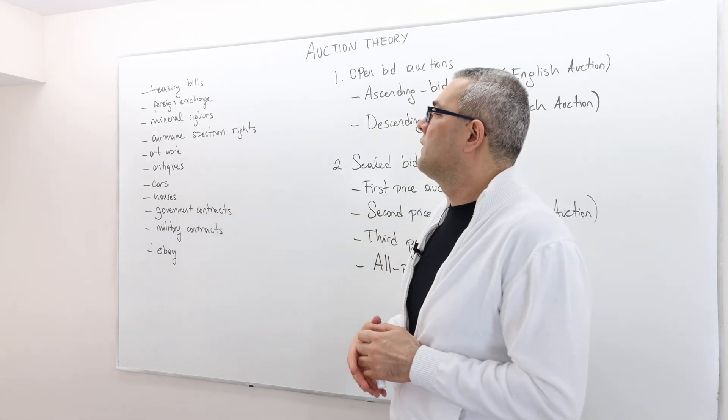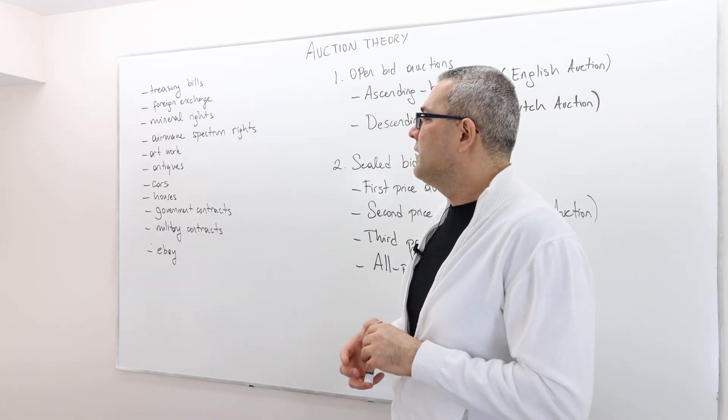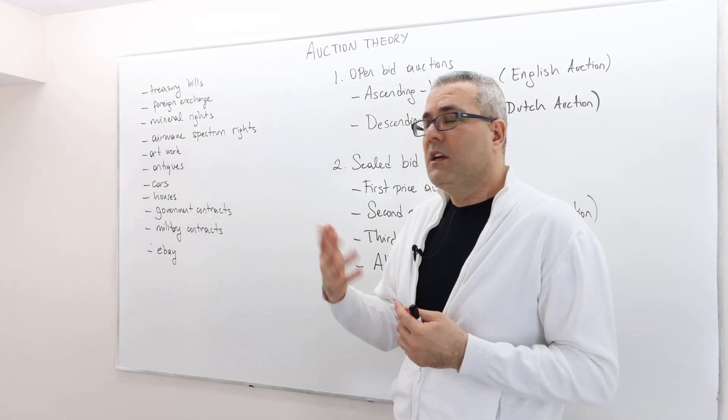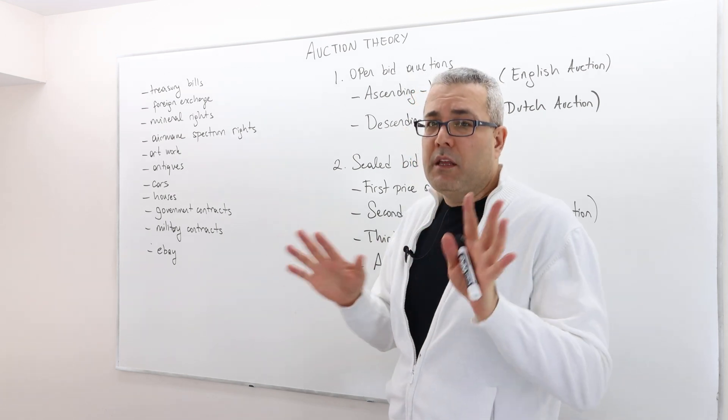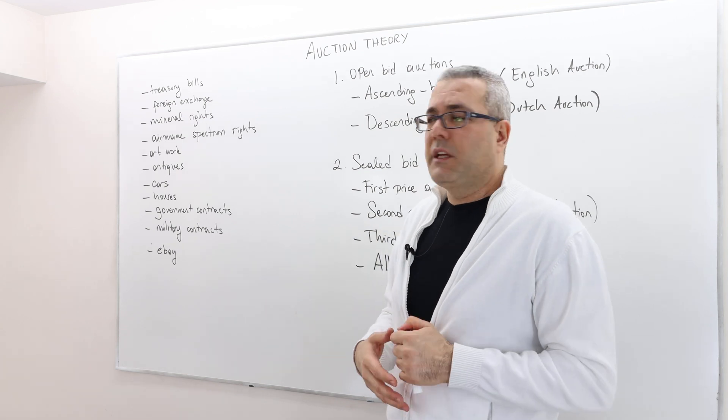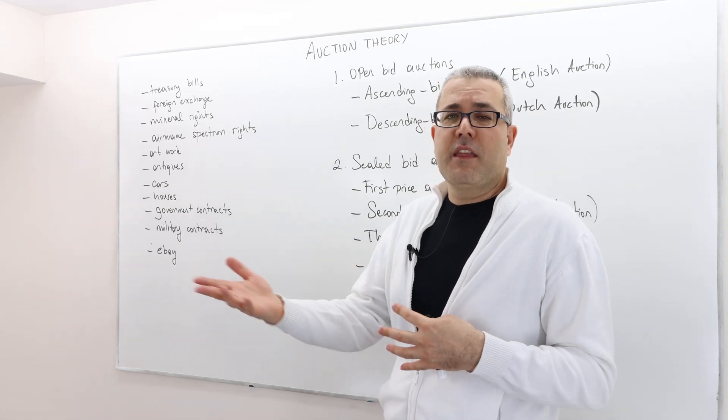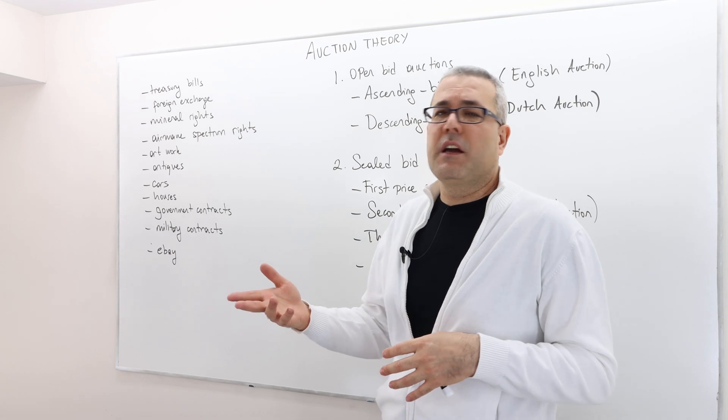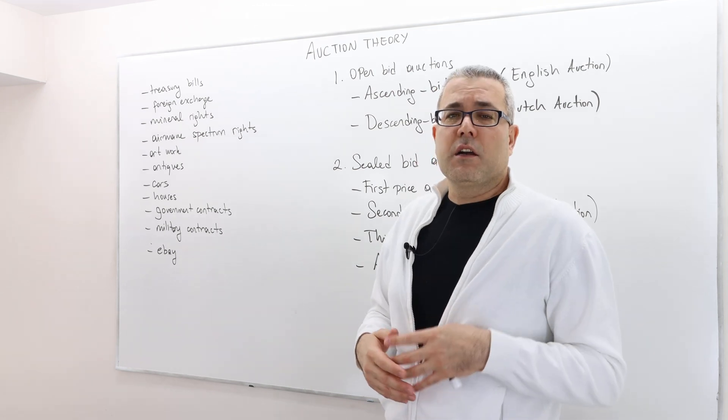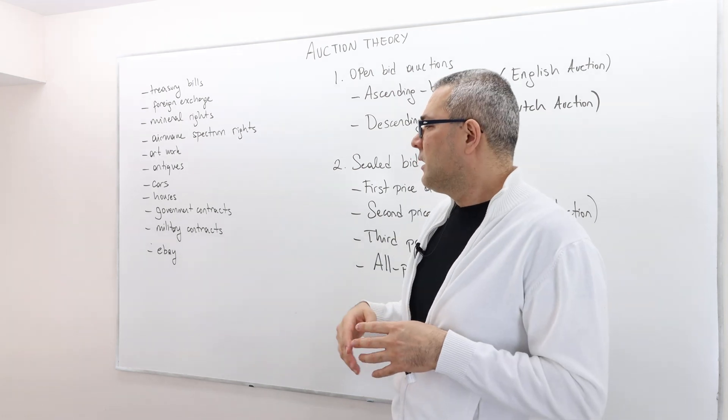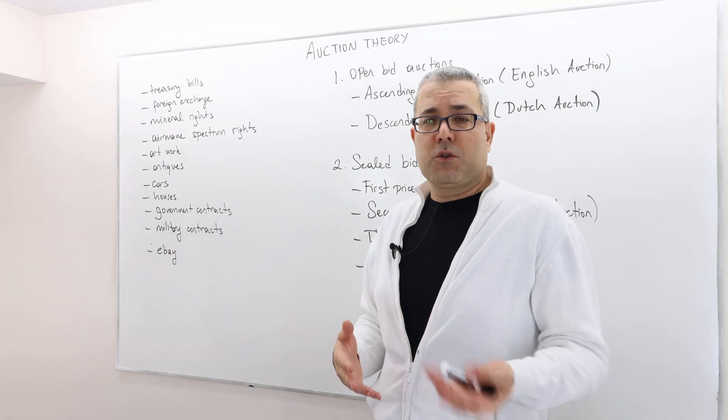foreign exchange, mineral rights, airway spectrum rights, artwork like expensive paintings, antiques and cars, houses, especially in the United States, in Canada and maybe in some parts of Europe. The house owners usually receive several offers, bids, from potential buyers and then they sell the house to the highest bidder. The government contracts, army contracts or military contracts are most oftentimes sold through auctions. And think about eBay, basically almost everything is sold through auctions.